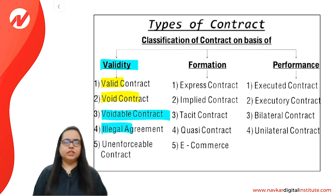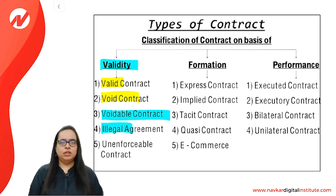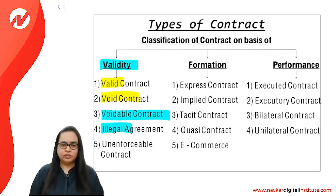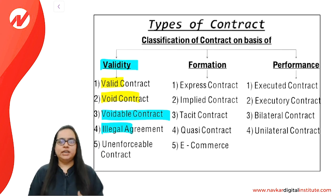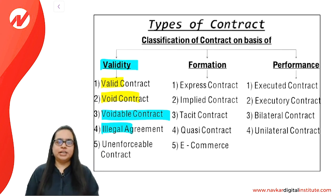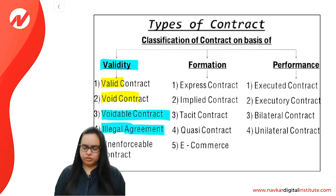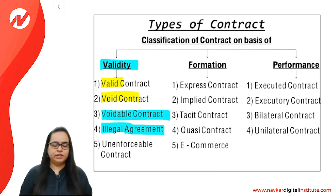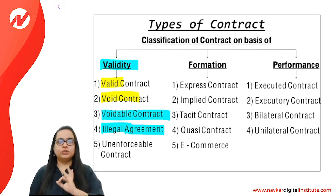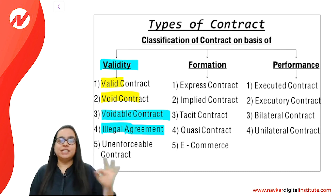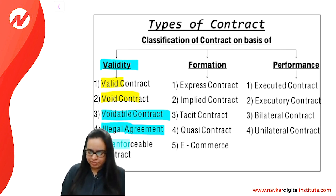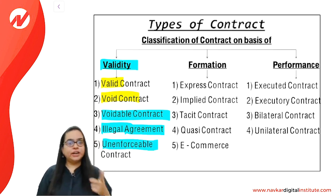An illegal contract is forbidden by law — for example, murder is a criminal offence forbidden by law. So it is void ab initio, meaning void from the very beginning. Then there is unenforceable contract.